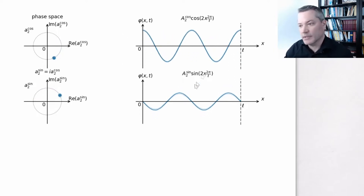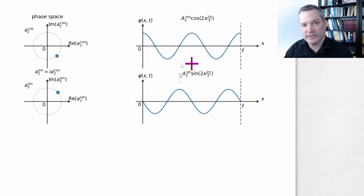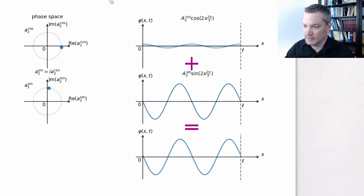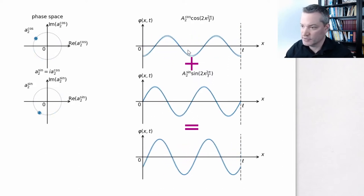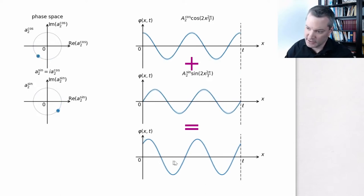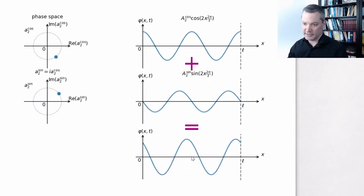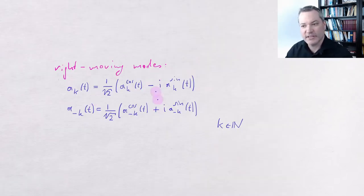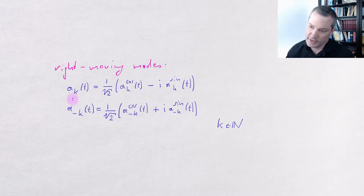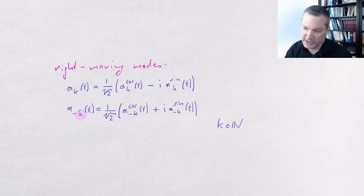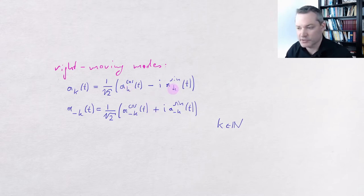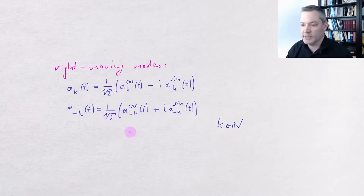Something very nice happens when we add these phase-shifted oscillations together: the sum of two oscillations — where the sine mode is retarded by 90 degrees in phase relative to the cosine mode — turns out to be a wave moving to the right. This leads us to the definition of the right moving modes or right movers. These are represented by complex valued variables lowercase a, indexed by both positive and negative integers, and they are defined as these linear combinations of our cosine and sine modes. The normalization is chosen such that the Hamiltonian in the new variables will have an equally nice form.